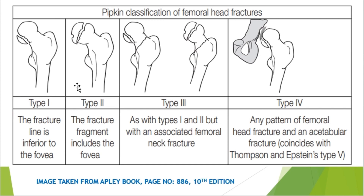This classification is based on the location of the fovea centralis, especially in type 1 and type 2. In type 1, if the fracture line is inferior to the fovea centralis, we call it type 1. As you can see here, the fracture line passes through the femoral head but is below the fovea centralis.